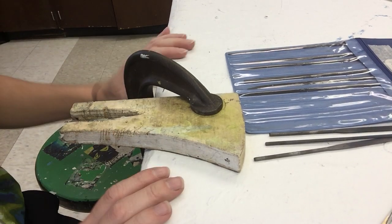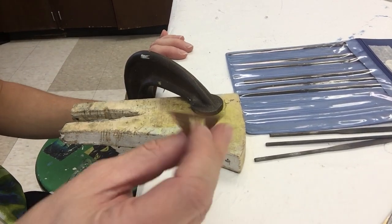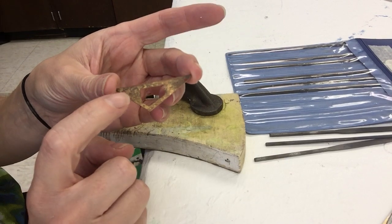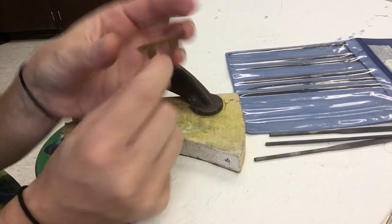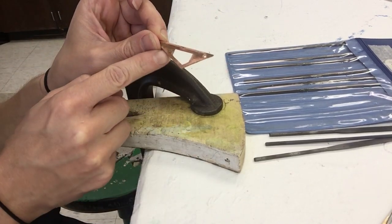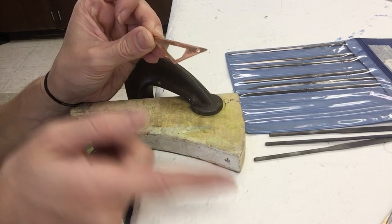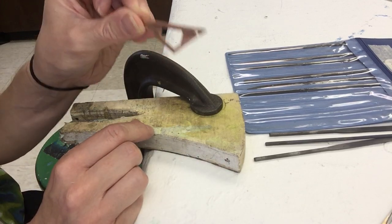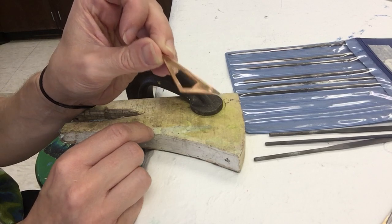Alright, today we're going to be talking about how to file your metal. This is done after you have spent the time cutting the interior shape and the exterior shape of your piece of metal and you've drilled the holes that you have. Now it's time to really clean up those edges and make sure that it's your strongest bit of work.